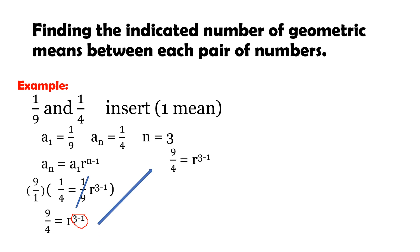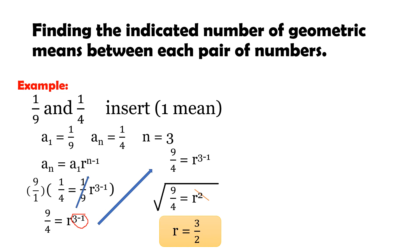To cancel the exponent 2, we take the square root of both sides. The square root of 9 is 3, and the square root of 4 is 2, so r = 3/2. To find the geometric mean: (1/9) × (3/2) = 3/18, which simplifies to 1/6.